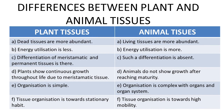The differences between plant and animal tissues include: dead tissues are more abundant in plant tissues whereas living tissues are more abundant in animal tissues; energy utilization is less in plant tissues but more in animal tissues; tissue organization is very simple in plants but complex in animals due to the development of organs and organ systems; and tissue organization in plants is stationary whereas in animals it has high mobility.